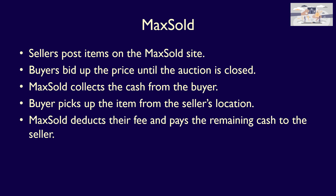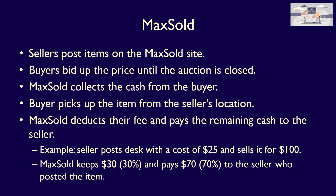MaxSold then deducts their fees, which is 30% of the selling price, from the sales price paid by the customer and remits the remaining cash, 70%, to the sellers. For example, say a seller bought a desk for $25 and placed it for sale on MaxSold's site. It sells for $100. MaxSold will collect the $100 from the buyer, keep $30, and remit $70 to the seller.